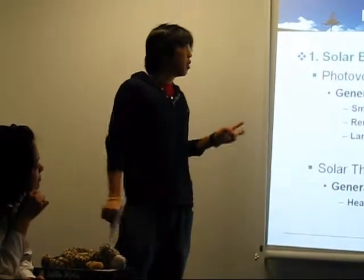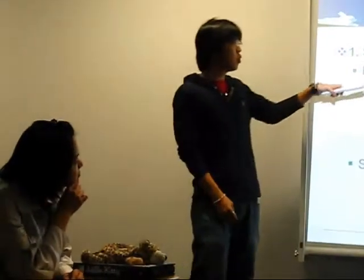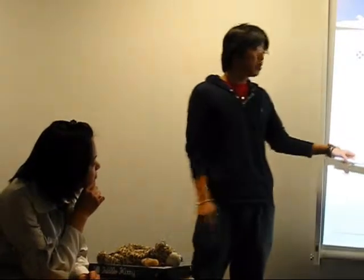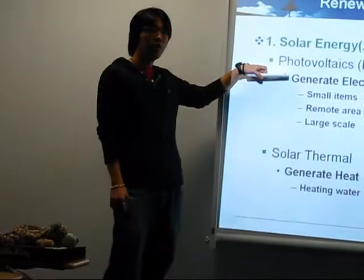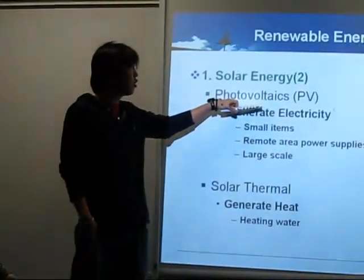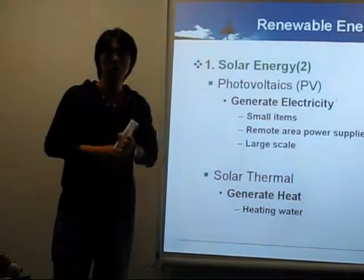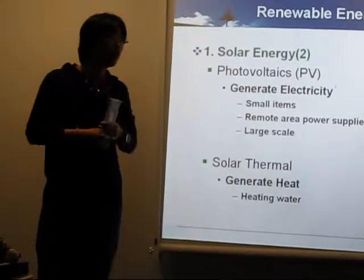There are two main ways of using solar energy. The first one is photovoltaics and the second one is solar thermal. Photovoltaics means photo, meaning light from Greek language. Photovoltaics means the adjective of volts. Do you know volts? We use in Australia, we use 240 volts.